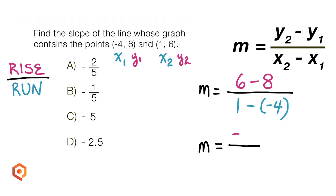While 6 minus 8 is negative 2, and 1 minus negative 4 is the same as 1 plus positive 4, or 5. The slope of the line that passes through those points is negative 2 over 5.